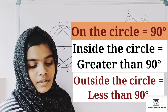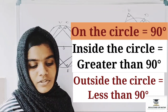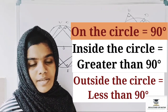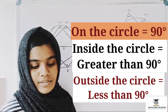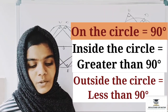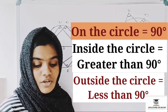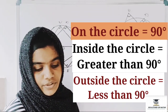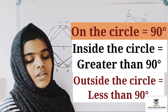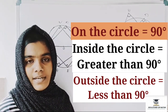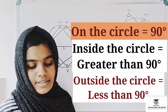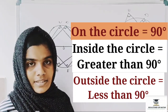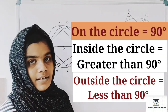Now let's look at the key concept: if you join the ends of the diameter of a circle to a point on the circle, we get a right angle triangle. The angle in a semi-circle is 90 degrees — that's the concept of the right angle triangle.